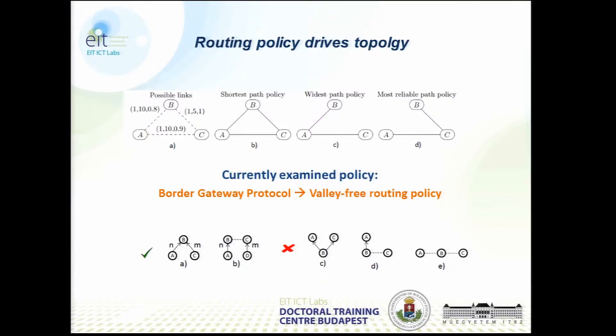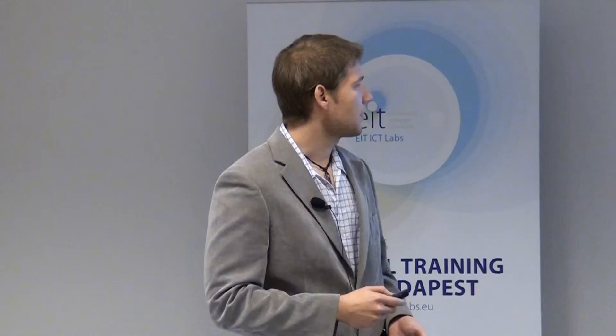In the internet, at the level of the autonomous systems, the used routing policy is the border gateway protocol. In my work, I try to analyze it step by step, because it consists of a lot of rules. The first step is to analyze the value-free routing policy — it is just some example of the valid and invalid paths during the communication according to the value-free routing policy.